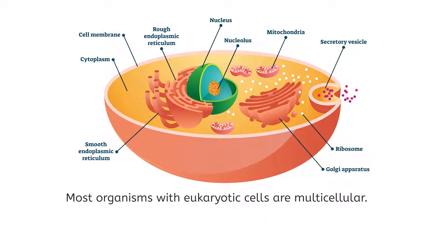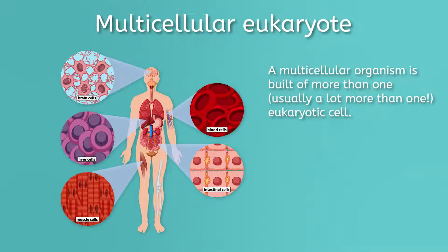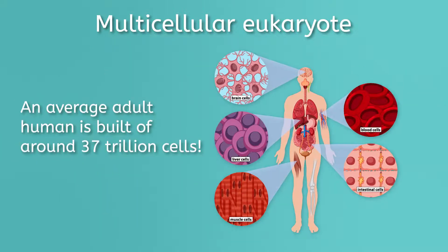Most organisms with eukaryotic cells are multicellular, meaning each organism is built of more than one — usually a lot more than one — eukaryotic cell. For example, us humans are multicellular eukaryotic organisms, and we are each made up of a lot more than one eukaryotic cell. It's estimated that an average adult human is built of around 37 trillion cells.